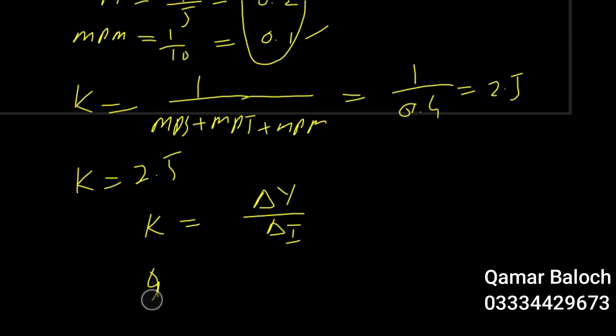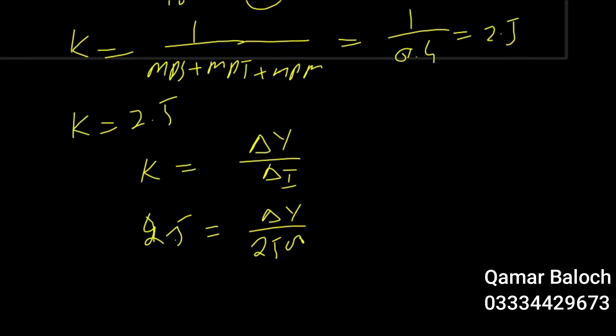Change in income is to be calculated and change in net investment is 2500. So now what you can do is just put one here and cross multiply. So change in income will be equal to 2.5 into 2500.